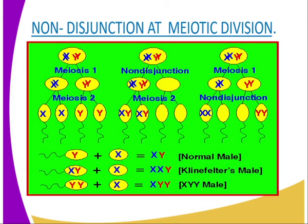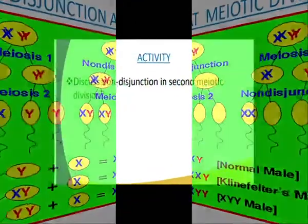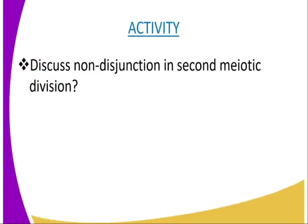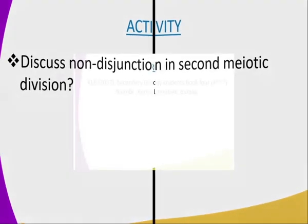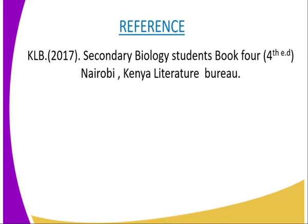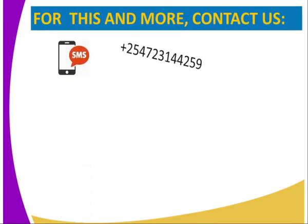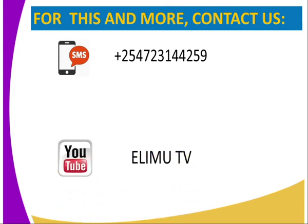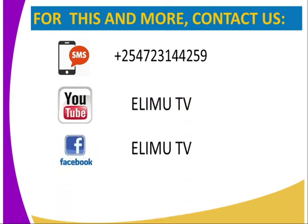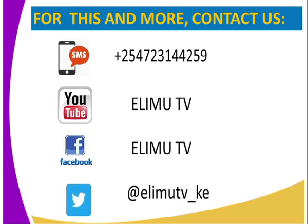Having covered that, we are going to have the following activity, whereby you are required to discuss non-disjunction in the second meiotic division. For this lesson and many more, you can refer to the KLB Secondary Biology Students Book 4. To get these biology lessons and more, you can send an SMS through the number on our screen, subscribe to our YouTube or Facebook page — both called ElimuTV — or tweet us at ElimuTV underscore Kenya. Subscribe to all these channels and we shall enjoy more biology lessons. Thank you.